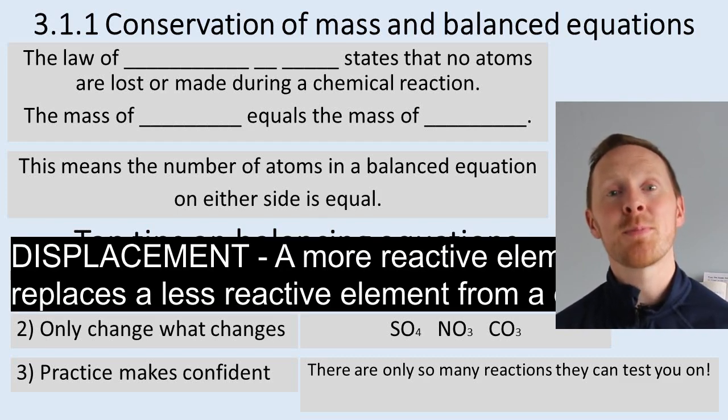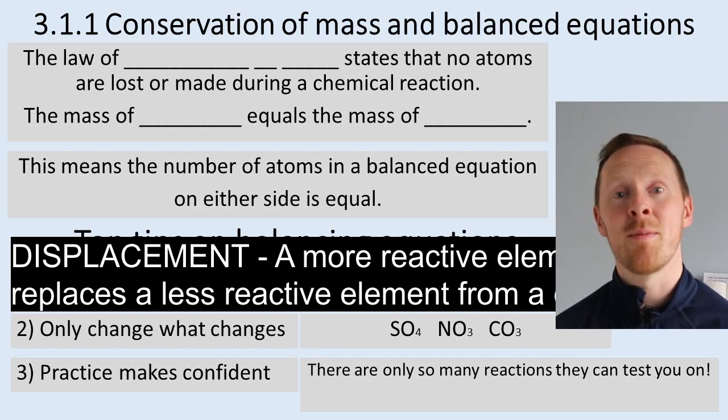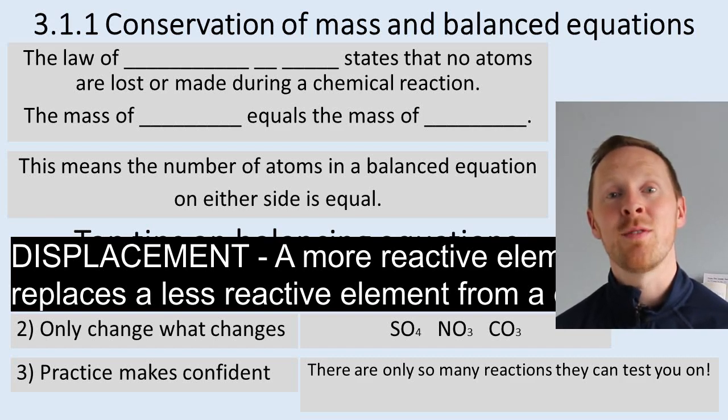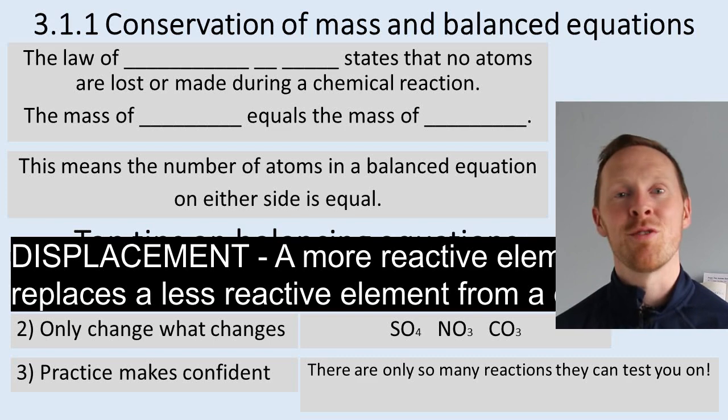D is for displacement reactions, where a more reactive metal, a more reactive element, will kick out a less reactive element. You'll have seen this when you've done about extracting metals, because iron can extract copper from copper sulphate, because iron is more reactive. You've also seen this when you consider the reactivity of group 7, because chlorine is more reactive than bromine. So chlorine displaces bromine from bromide ions. Go back and have a look at that when you looked at group 7, if you're unsure about displacement reactions of halogens.